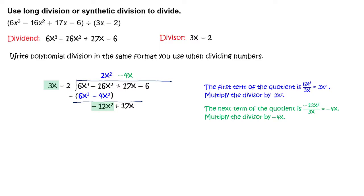The next term of the quotient is negative 12x squared divided by 3x, which equals negative 4x. Multiply the divisor by negative 4x to get negative 12x squared plus 8x. Subtract and simplify to get 9x.